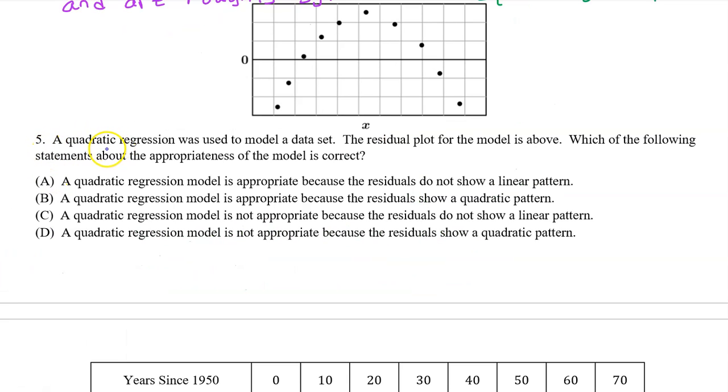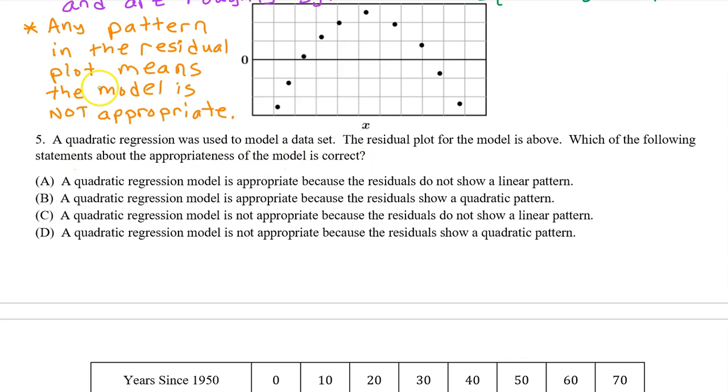Number five. A quadratic regression was used to model a set of data. The residual plot for this model is above. Which of the following statements about the appropriateness of the model is correct? Any pattern in the residual plot means the model is not appropriate. This residual plot definitely shows a pattern, so the quadratic regression model is not appropriate, and the answer is D.